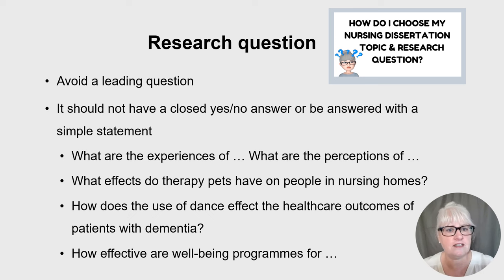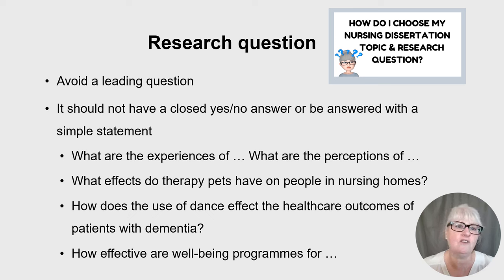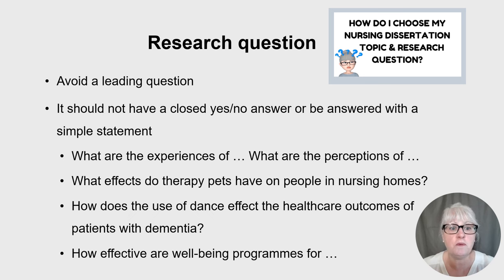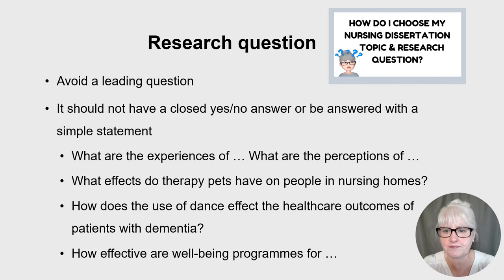Another example might be: 'How does the use of dance affect healthcare outcomes of patients with dementia?' — again, not leading toward a particular effect. Or: 'How effective are well-being programs for a certain group?' My PhD question was: 'What is the quality of nurse-patient interactions when nurses use EPR in hospital wards?' — the quality could be poor or high; it's open and unbiased. I have a free video on my YouTube channel that offers more advice on going from a broad area of interest to a focused research question.